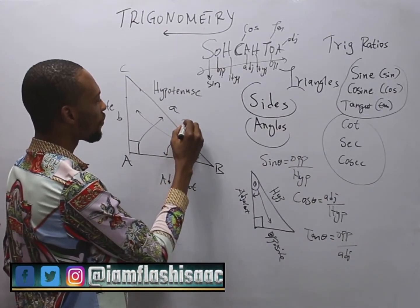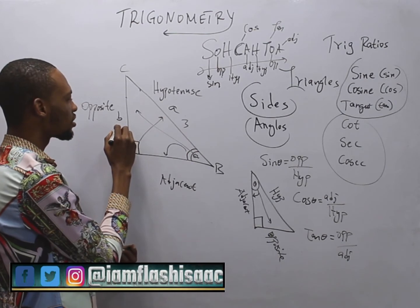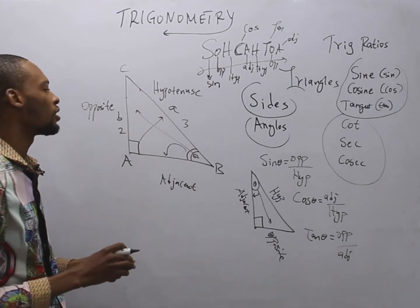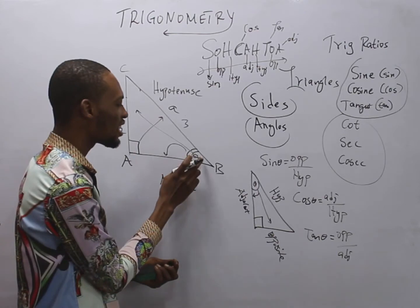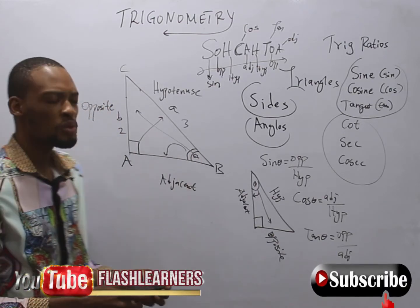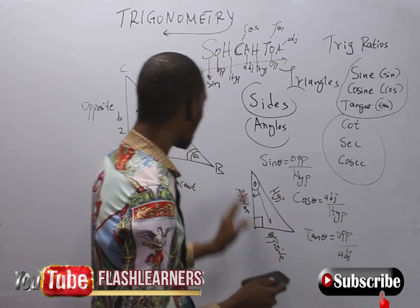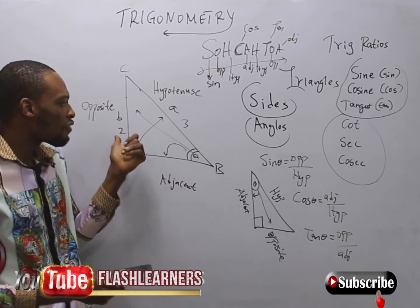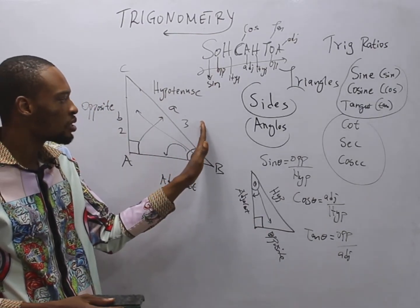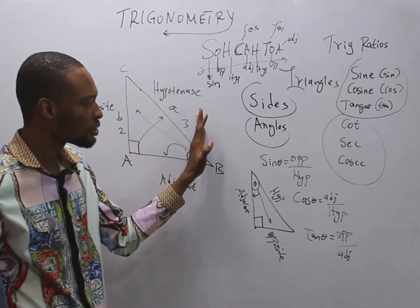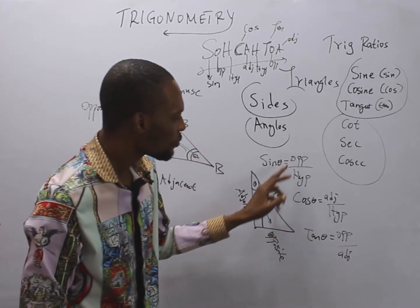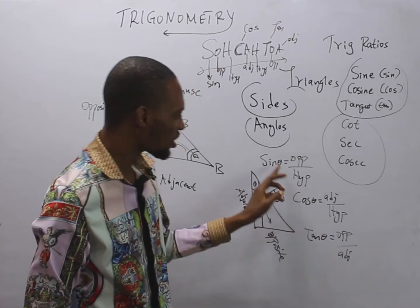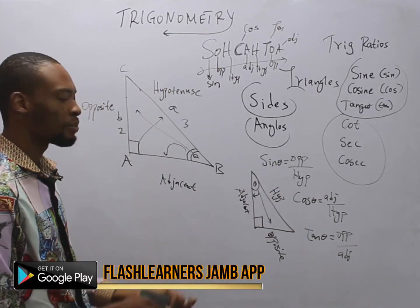If here is 3 and here is 2, for example, and I say find this angle, what you do is simply look for the trig ratio that can relate these values we have because we don't have adjacent. We have opposite and we have hypotenuse. So which trig ratio relates opposite and hypotenuse? Just sine relates opposite and hypotenuse.